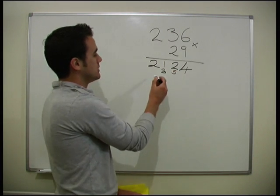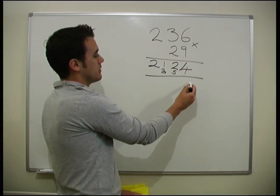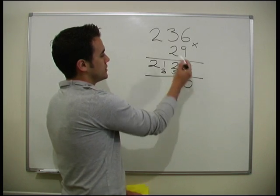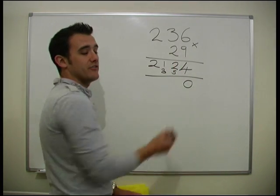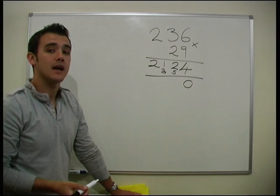Now we need to do the 2 times by everything. So remember, put a 0 in because it's 20 times everything. So we just put our first 0 in, which takes into account the 20.